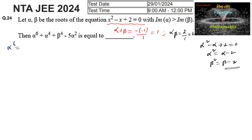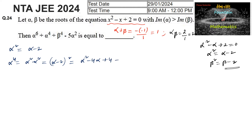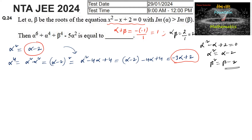Alpha² equals alpha - 2. Now alpha⁴ = alpha² × alpha² = (alpha - 2)² = alpha² - 4alpha + 4. Substituting alpha² = alpha - 2, we get (alpha - 2) - 4alpha + 4, which simplifies to -3alpha + 2. So alpha⁴ = -3alpha + 2.